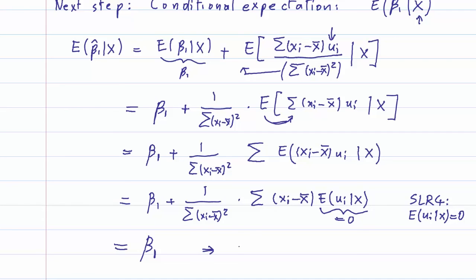This implies that the expectation of beta 1 hat conditional on x is equal to beta 1 — it is unbiased. Note that we do not need SLR 5 for this proof. So even if we don't have homoskedasticity — if the variance of the error is not constant — we still have unbiasedness. In the next video, we are going to show the unbiasedness of beta 0 hat.